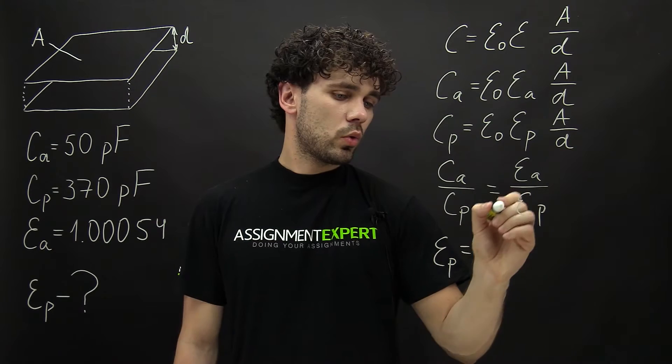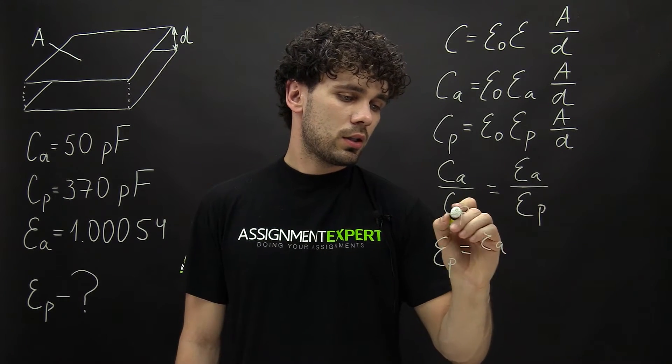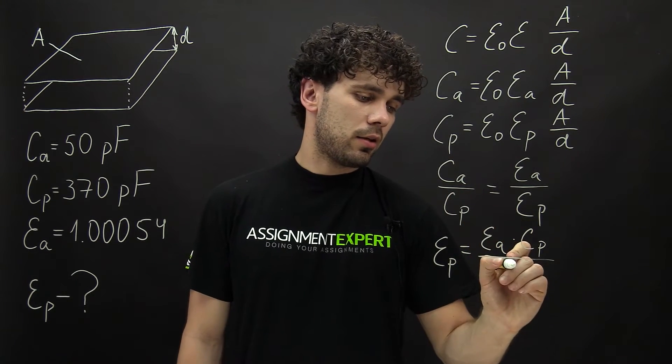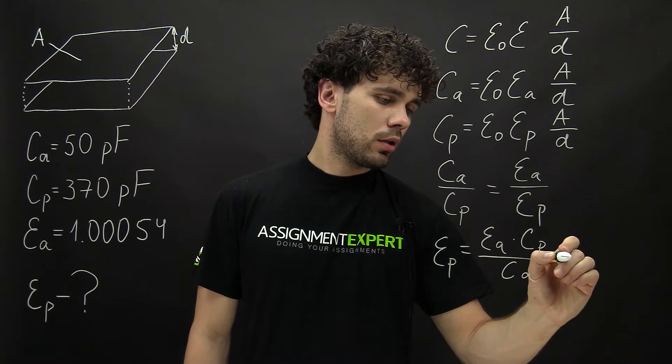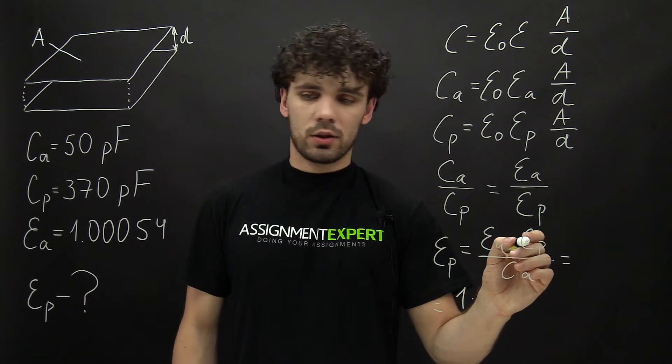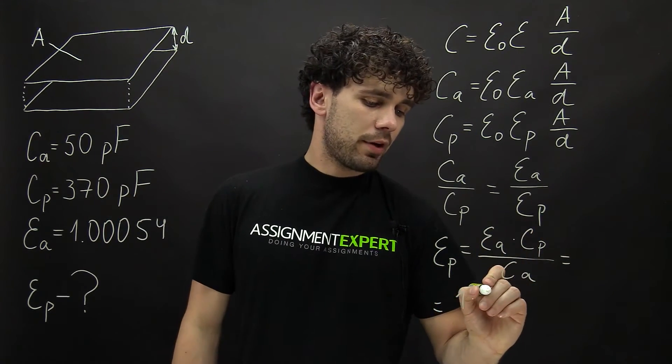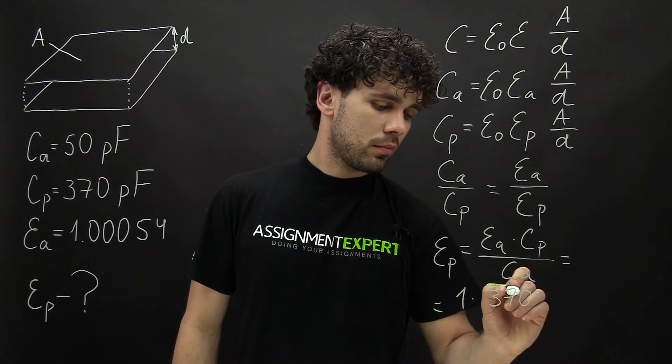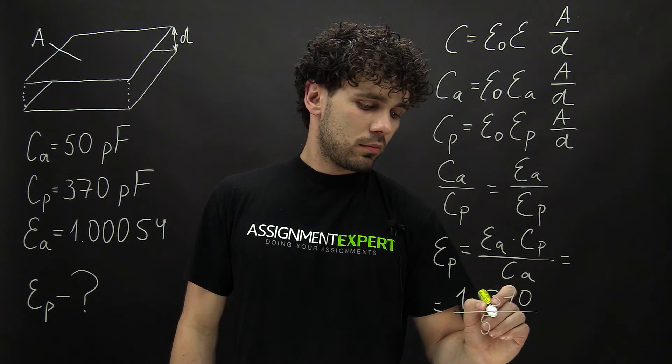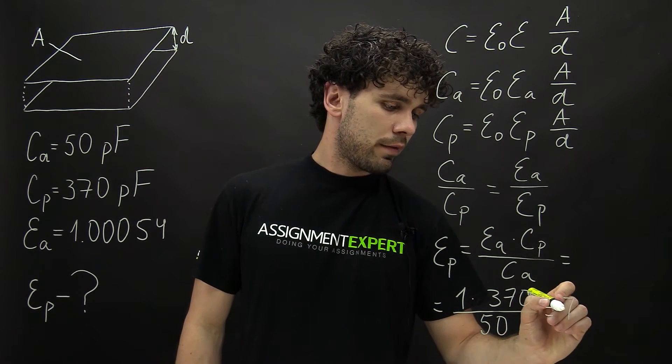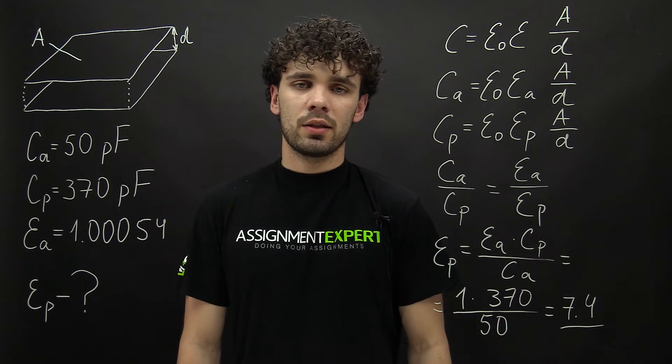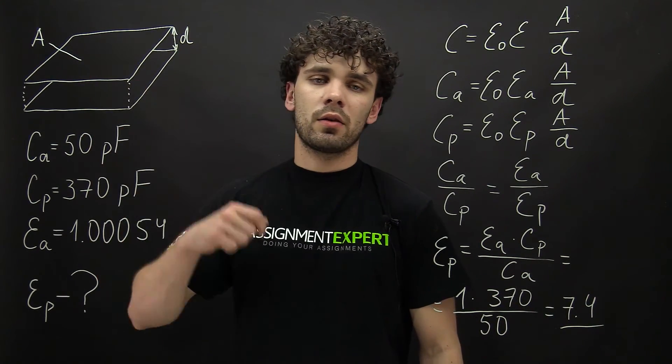It is equal to ε_A times C_P over C_A. And this is equal to 1 times 370 over 50, and this gives us 7.4. Here is the dielectric constant of the plastic between the two plates of this capacitor.